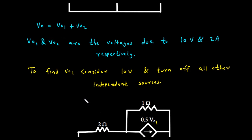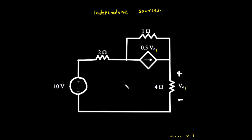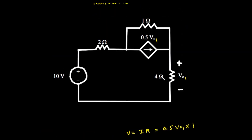Step 1: Finding V01 — contribution from the 10V source. To find V01, we will consider the 10-volt source and turn off all other independent sources. In this circuit, that means we turn off the 2-amp current source. Turning off a current source means replacing it with an open circuit. The resulting circuit is a single loop containing the 10-volt source, the 2-ohm resistor, the 1-ohm resistor, the dependent source, and the 4-ohm resistor. The voltage across the 4-ohm resistor in this new circuit is V01.